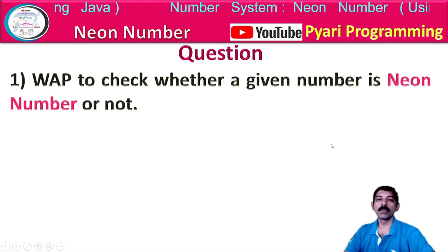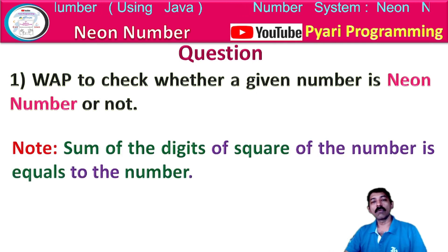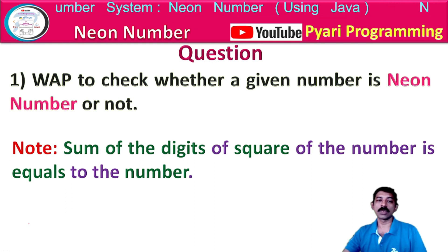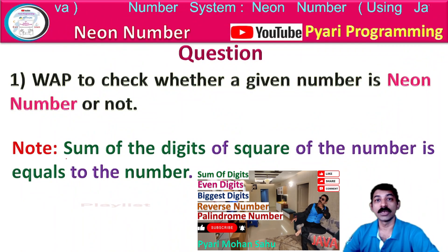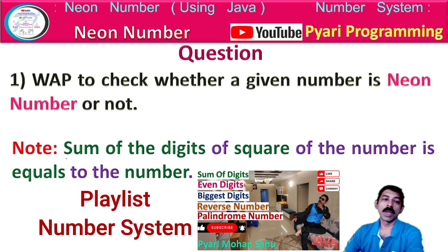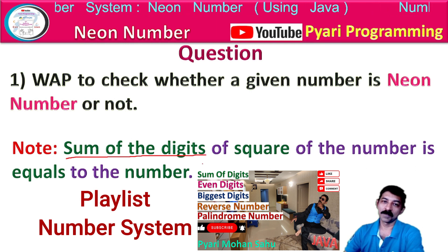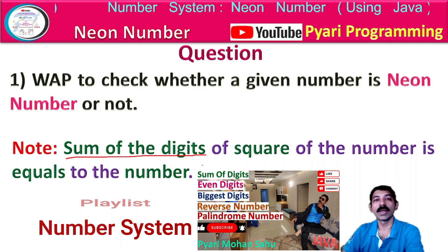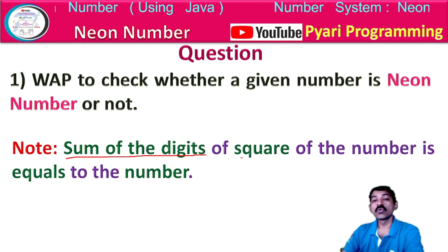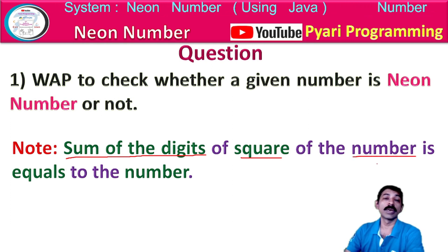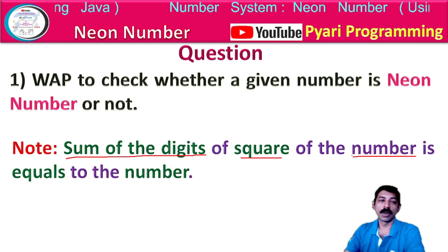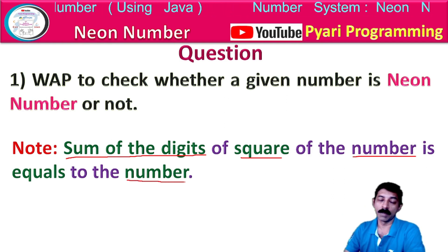Now let's see what the question is saying: write a program to check whether a given number is a neon number or not. A neon number is one where, if you calculate the square of the number and then find the sum of the digits of that square, the result equals the original number. We don't want the sum of digits of the number itself — we want the sum of digits of the square of the number.